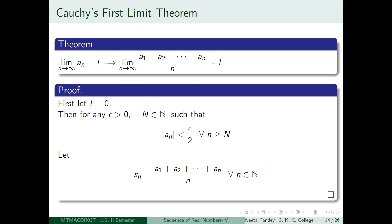The next result is Cauchy's First Limit Theorem. It states: if limit of an = L, then the arithmetic mean sequence Sn = (a1 + a2 + ... + an)/n also satisfies limit of Sn = L. The arithmetic mean sequence looks like: a1, (a1+a2)/2, (a1+a2+a3)/3, and so on.